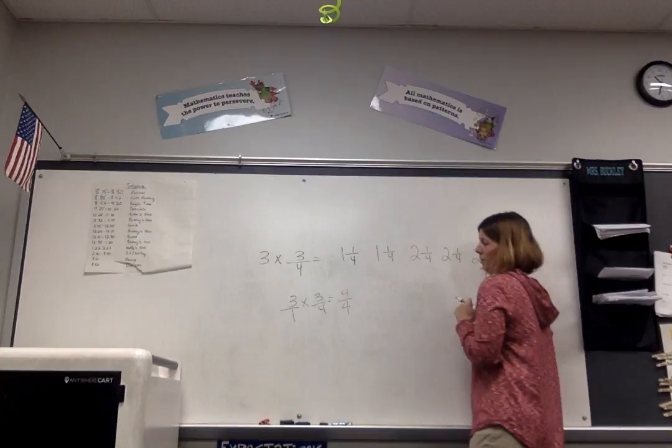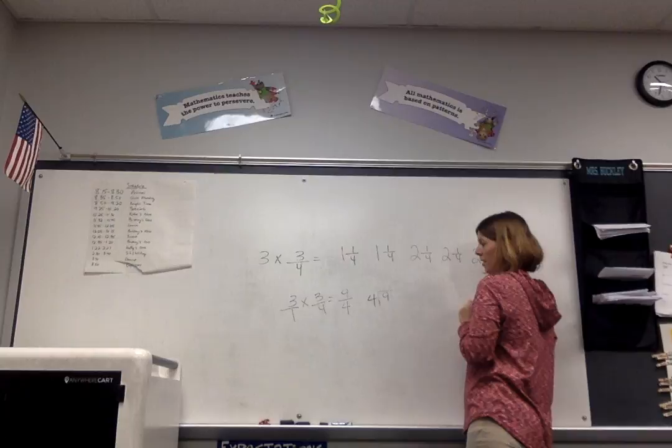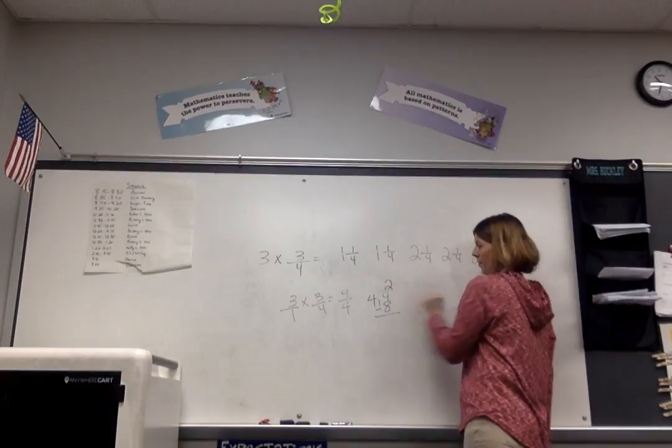Okay, I like how you said that it's improper, that's when the top number is bigger than the bottom. So we want to divide this. And four goes into nine twice. And then four times two is eight, so eight minus nine is one.